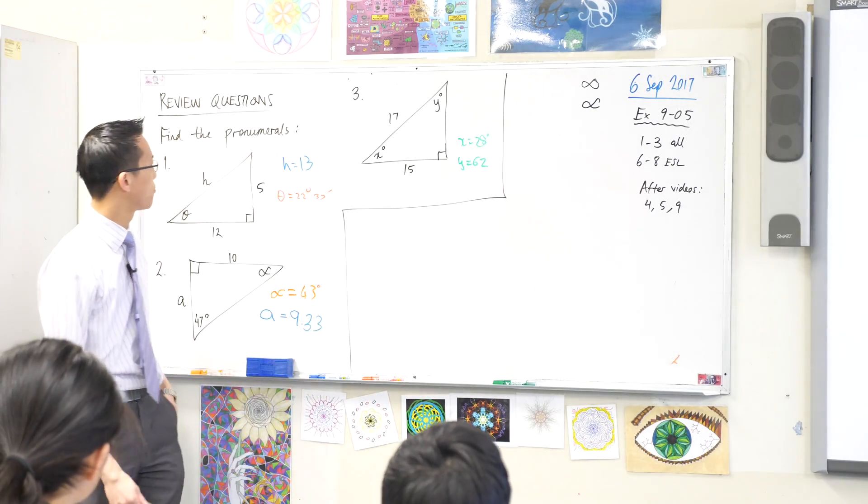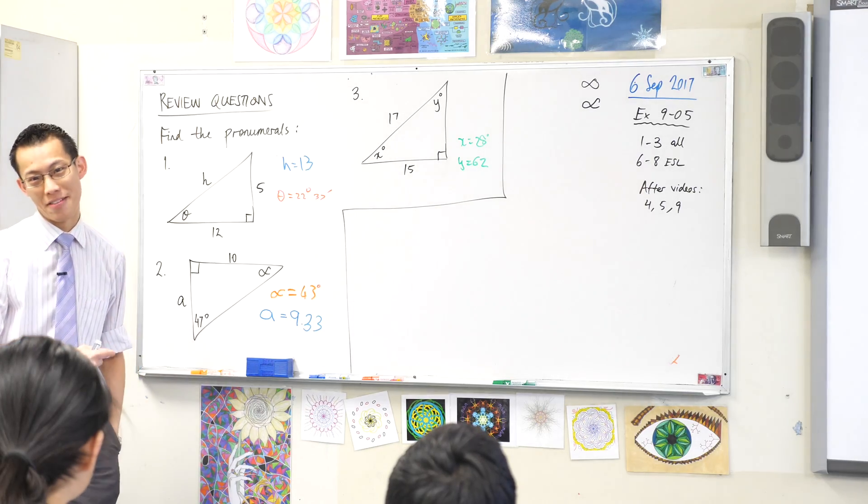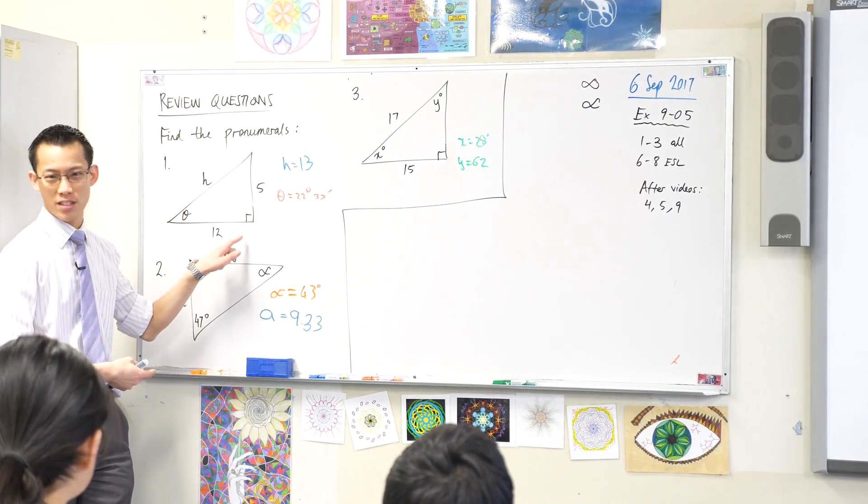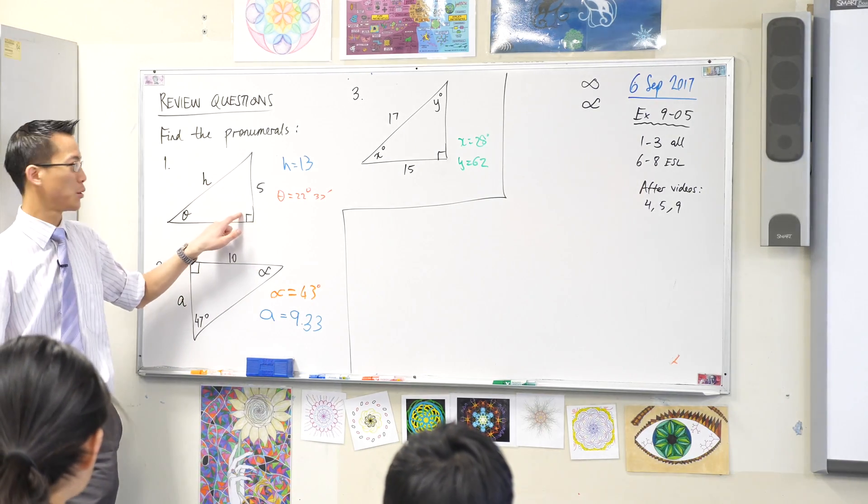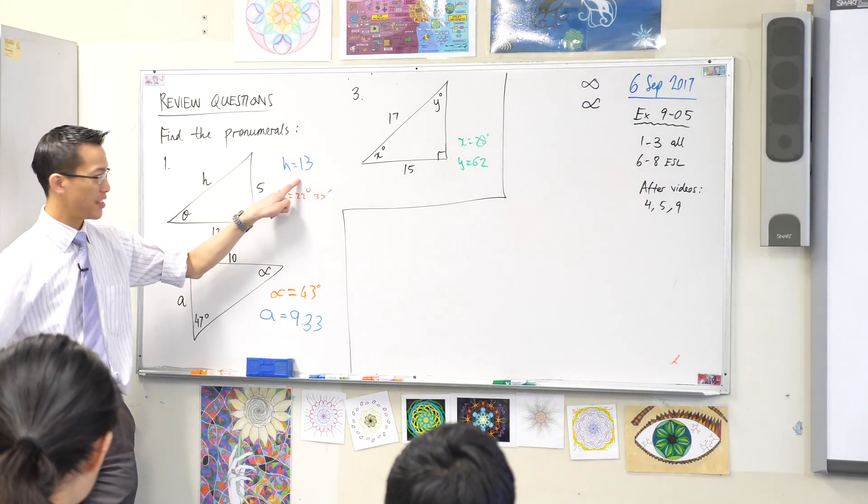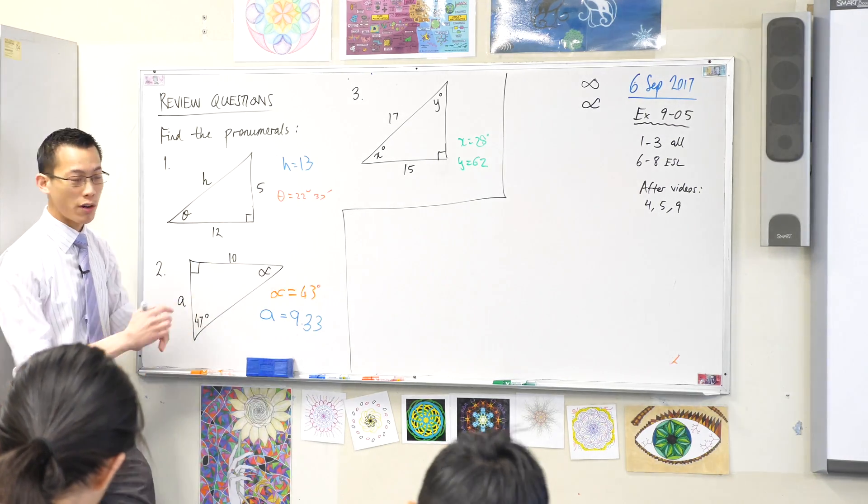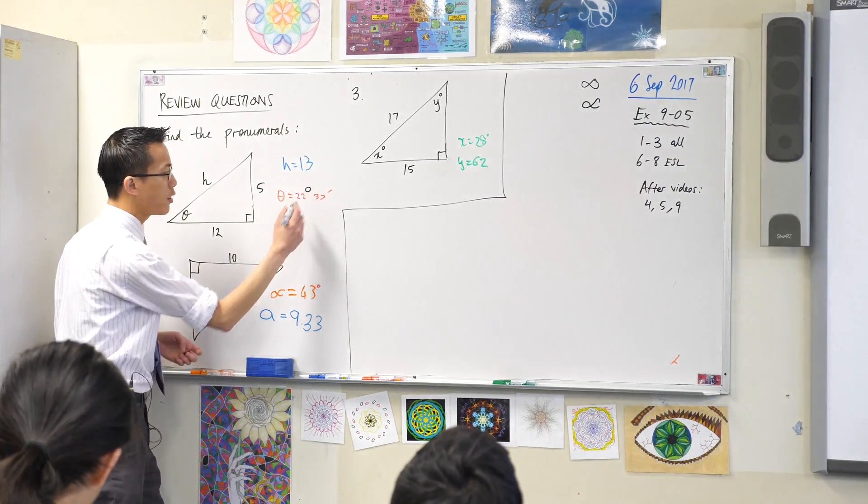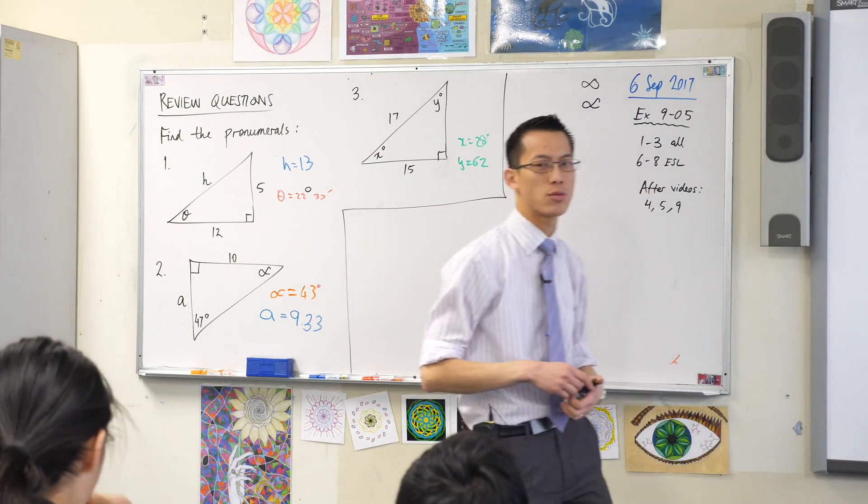Start with number one, what do you use to work out h? This one is Pythagoras, that's why I use that as my first example. 5 squared plus 12 squared does equal 13 squared because it's a right angle triangle. So you've got a length there. Fantastic. Now you don't actually need that length to find out theta. You could have found theta first. How would you have done it? If you didn't know what h was, how would you do it?